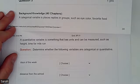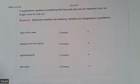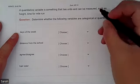So a categorical variable places people in groups, so like eye color, favorite food, etc. A quantitative variable is something that has units and can be measured. So we're going to determine if these following ones are categorical or quantitative. So I have days of the week, that would be like Monday, Tuesday, Wednesday, etc.